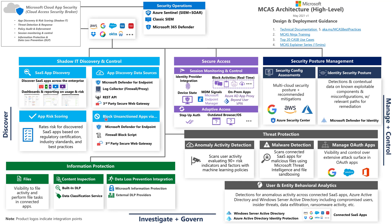That's Shadow IT Discovery and Control — I have deeper videos on that on my channel. Let's talk about information protection. This is where MCAS can go out and discover sensitive data across your files in those different SaaS apps. If I integrate Google Workspace or Salesforce with MCAS, I can discover sensitive data in those files and apply data loss prevention controls. I can use the built-in DLP engine or the data classification service to discover that data, look for file fingerprints, do exact data matching or sensitive information type matching, and then apply rights management through Microsoft Information Protection, which will encrypt that data. I can also integrate this with an external DLP system.